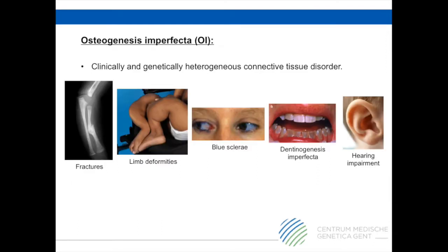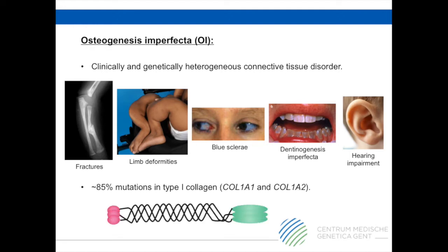Osteogenesis Imperfecta, or OI, is characterized by a variable degree of bone fragility with susceptibility to bone fractures and limb deformities, growth deficiency, blue sclerae, dentinogenesis imperfecta, and hearing impairment. In approximately 85% of all OI patients, a mutation is identified in one of the genes encoding type 1 procollagen, the COL1A1 and the COL1A2 gene.